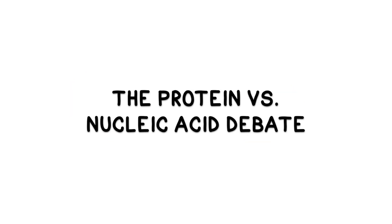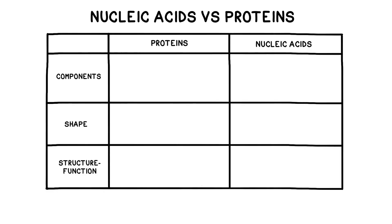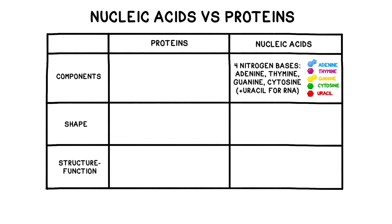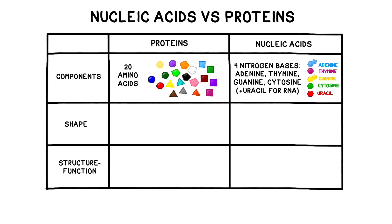Nucleic acids and proteins are both biomolecules, but they're quite different from one another. DNA is a long, double-stranded molecule composed of just four bases—adenine, thymine, cytosine, and guanine. RNA, another nucleic acid, is also composed of just four bases, although it uses uracil instead of thymine. By contrast, proteins are incredibly structurally complex and contain combinations of 20 different building blocks called amino acids.